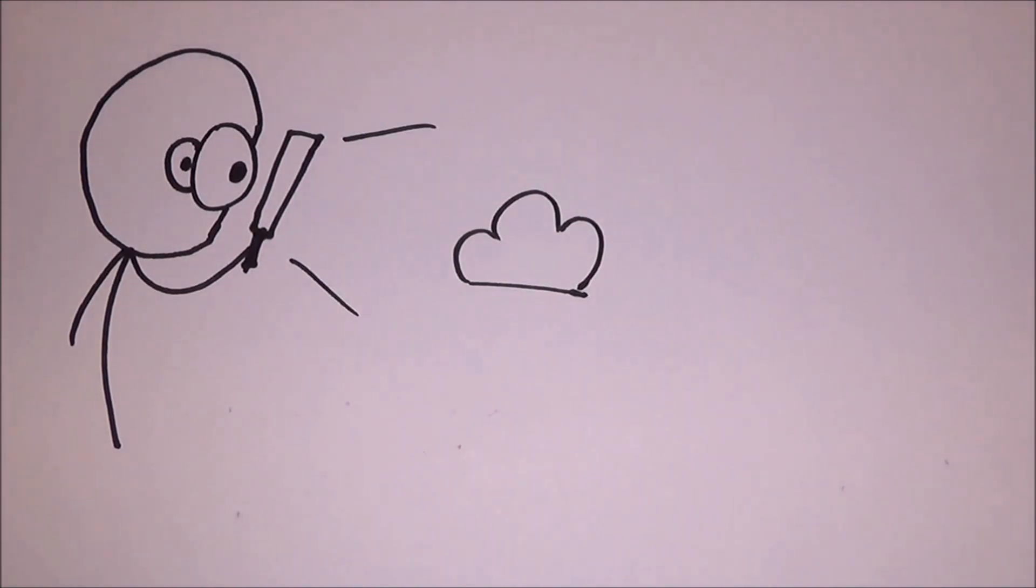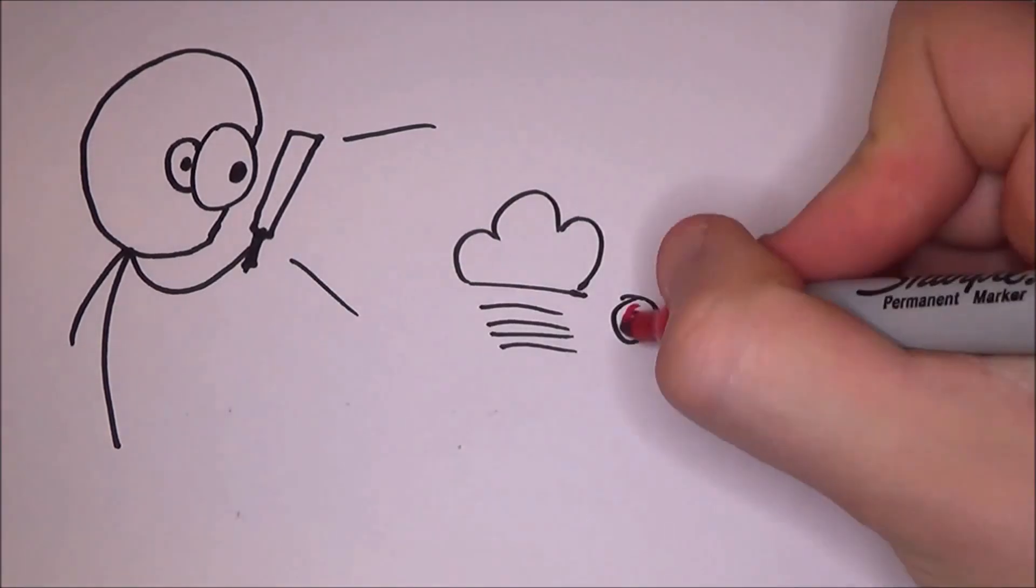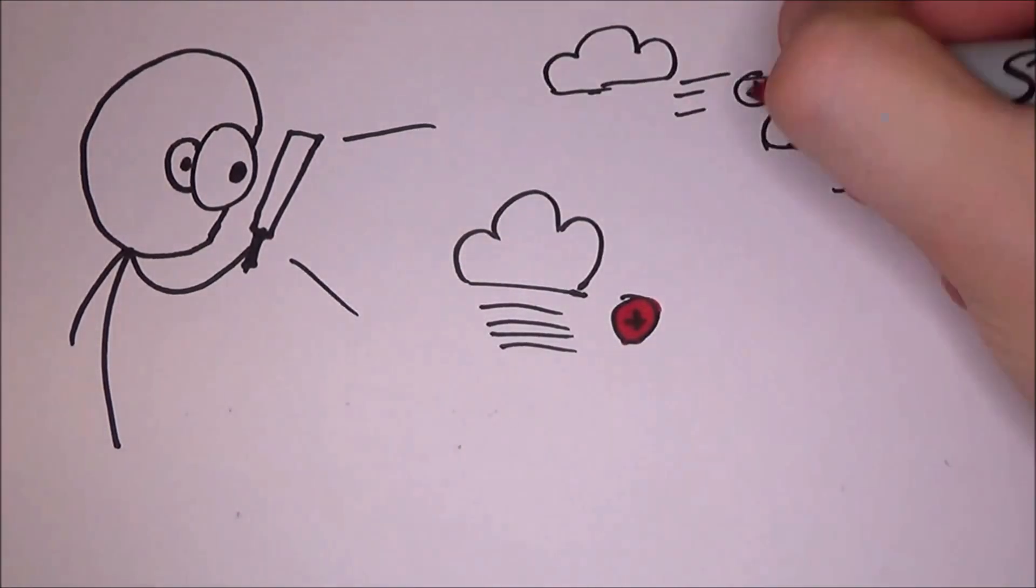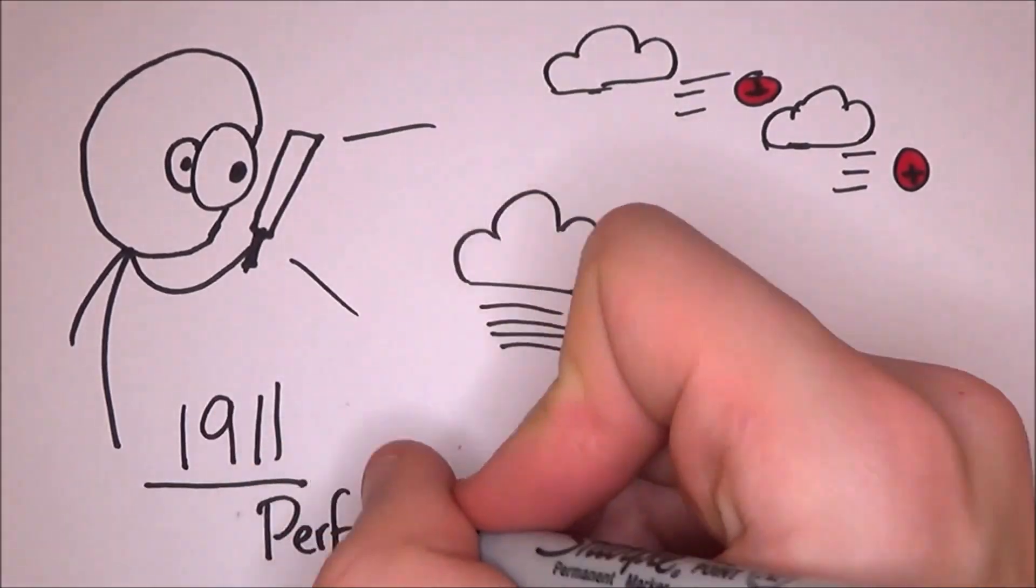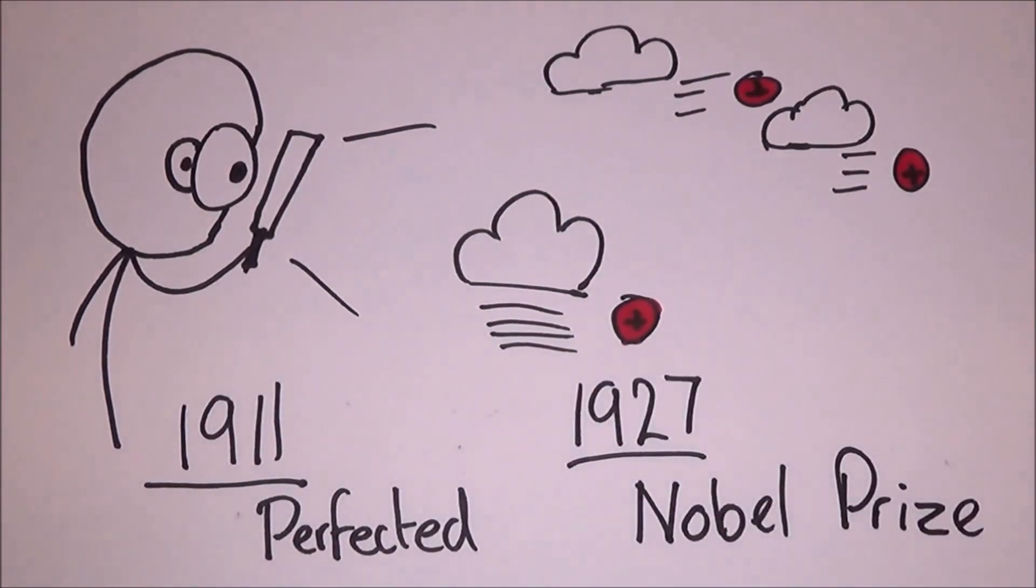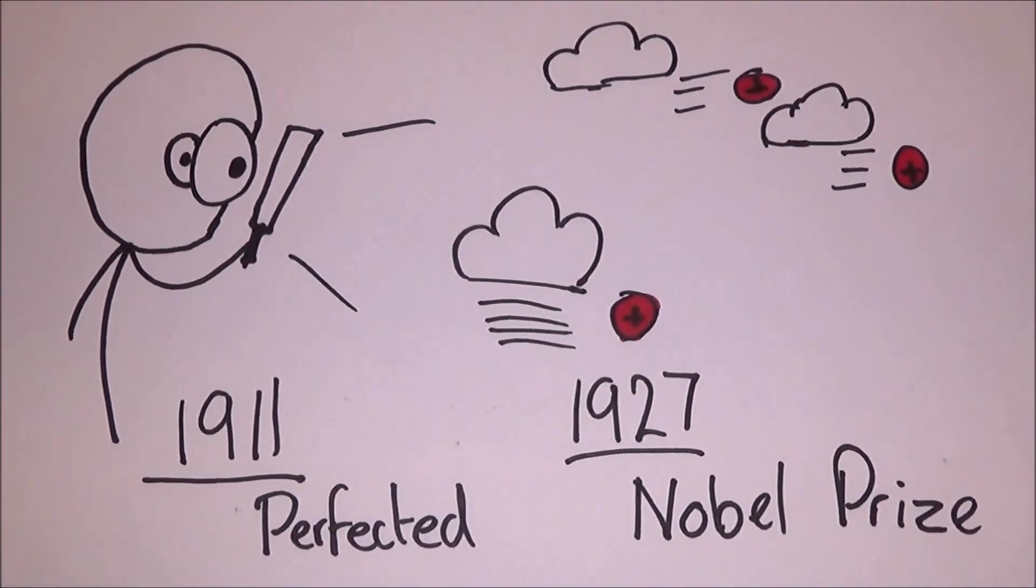After a short amount of tests, he found that ions could be used to help with water droplet formation, to which he then pursued. He perfected his first cloud chamber in 1911. Then in 1927, Wilson and Arthur Compton received a Nobel Prize in Physics for their work on the cloud chamber.